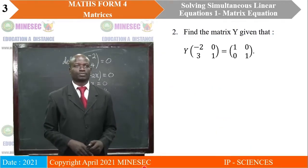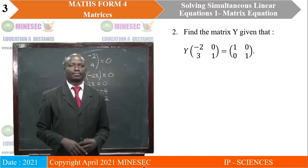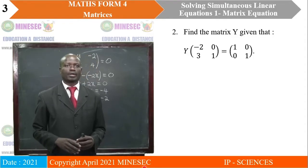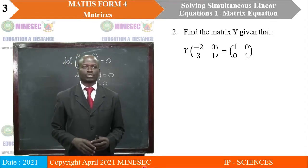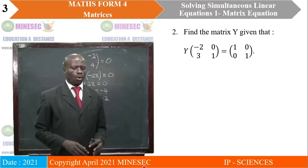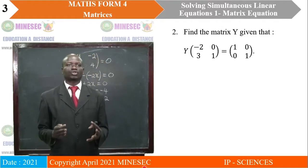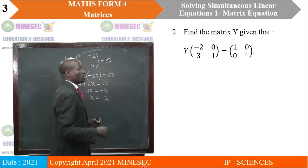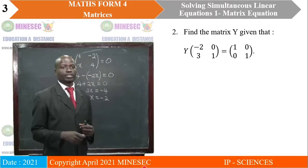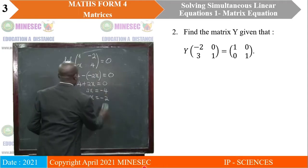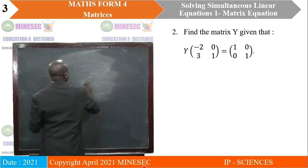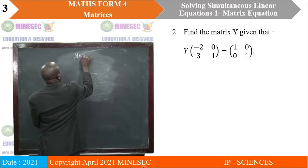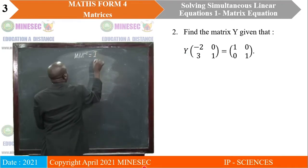For the second question, find the matrix Y, given that Y times the matrix [-2, 0; 3, 1] is equal to the identity matrix [1, 0; 0, 1]. We said that if you multiply two matrices and the result is an identity matrix, then it means one of the matrices is the inverse of the other. The concept is that a matrix M times M inverse gives us the identity matrix.